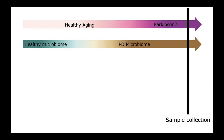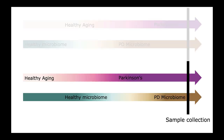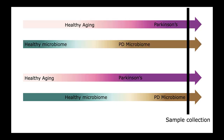There are two ways we might see a microbiome associated with Parkinson's disease in these patients. One is that you start out with healthy aging and a healthy microbiome, and then something about your microbiome changes and you develop Parkinson's disease. Or you might have healthy aging and a healthy microbiome, and then you develop Parkinson's disease and your microbiome changes in response to the disease. These are two possible ways that we could see a Parkinson's disease phenotype in an individual.